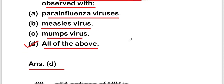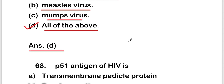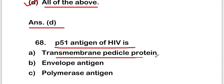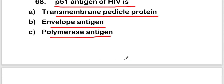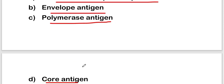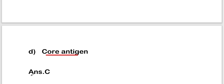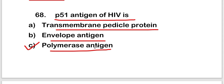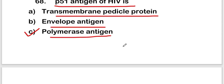The next question is: P51 antigen of HIV is a transmembrane vertical protein, envelope antigen, polymerase antigen, or core antigen. The right answer is option C — polymerase antigen. So P51 antigen of HIV is a polymerase antigen.